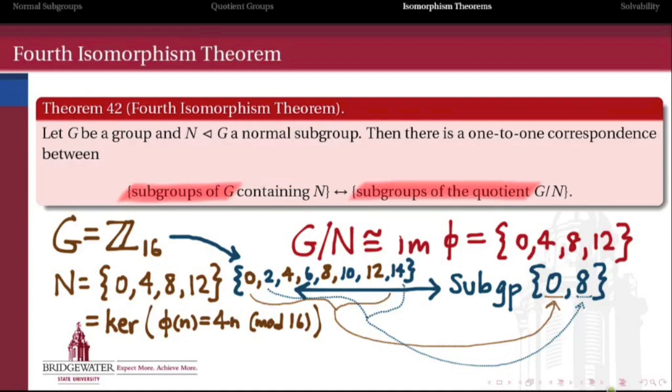So notice on the left here what I have is actually a subgroup {0, 2, 4, 6, 8, 10, 12, 14}, and that subgroup contains N = {0, 4, 8, 12}. So there's a one-to-one correspondence between subgroups of G that contain N and subgroups in the quotient G mod N.